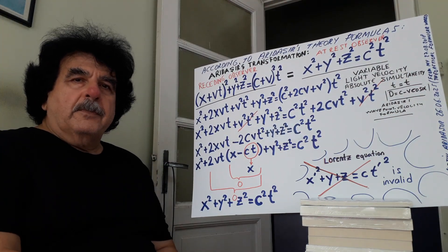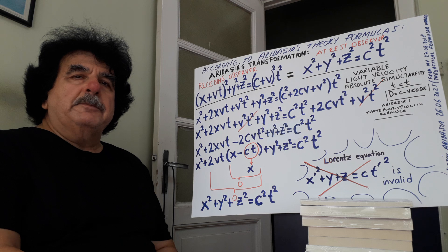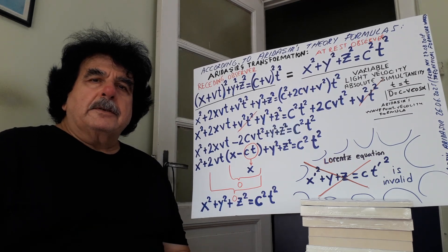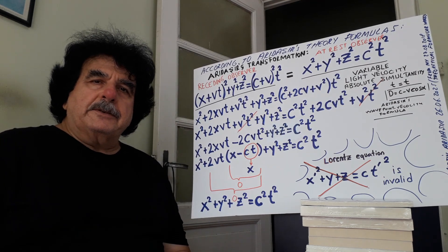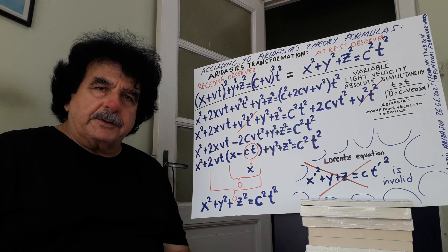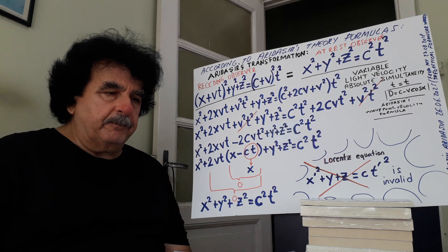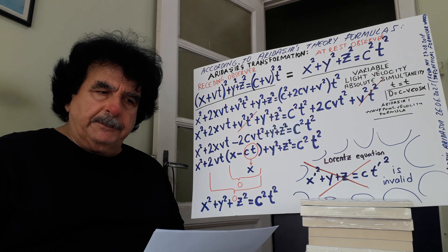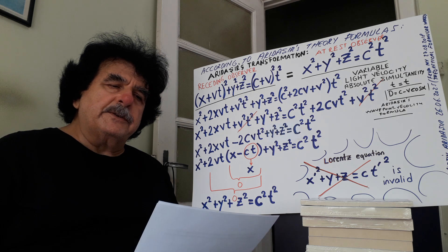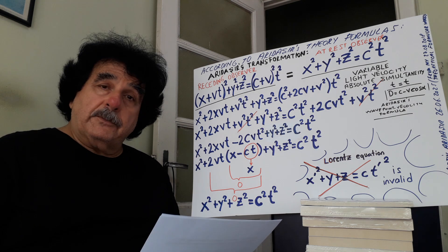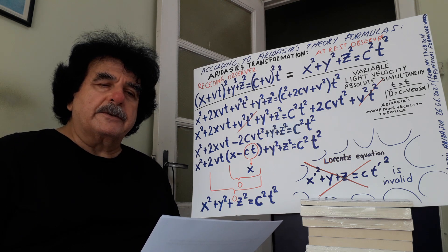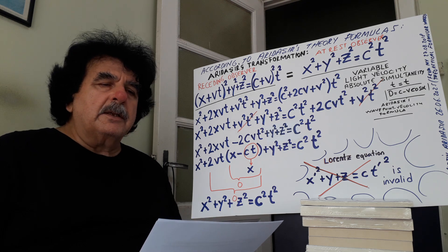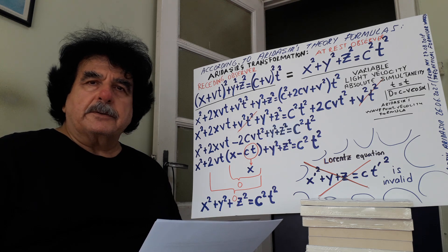Hello, my name is Metin Ardaşır. This is the 379th part of the explanation of my theory: Ardaşır's mind knew transformations — transformation against Lorentz and Galileo transformations, and the fall of Einstein's special relativity.